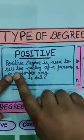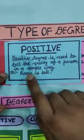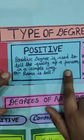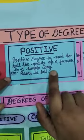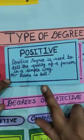Positive degree is used to tell the quality of a person in a simple way. Example, Ramu is tall.